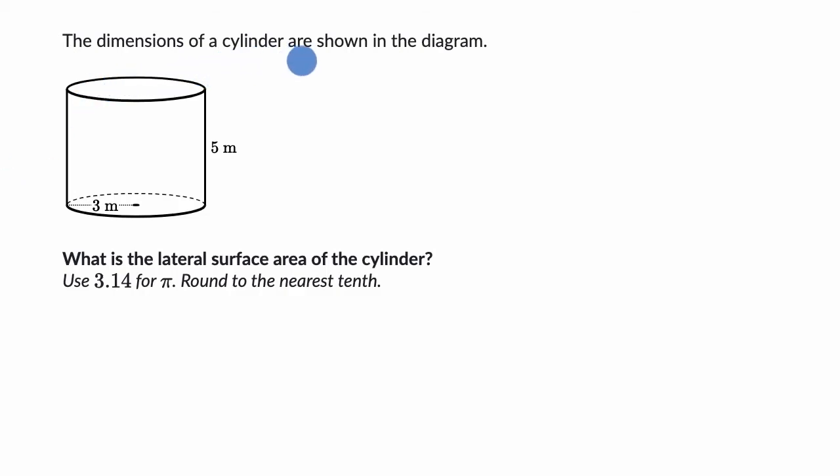We're told the dimensions of a cylinder are shown in the diagram, fair enough. So the radius of the base, which is going to be the same as the radius of the top, is three meters, the height is five meters.